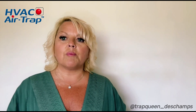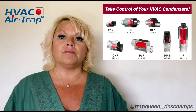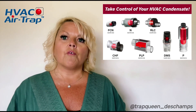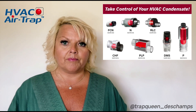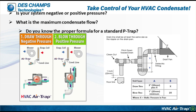And that's when the standard P-trap fails. So what is a better solution? For a negative pressure system, the standard P-trap formula is: take the static pressure of the system, times two, plus one, to get your height. So for example, if you have a two-inch static pressure, that means you need a four to five inch drop for a standard P-trap. Now, the solution we're going to talk about today is called the air trap.